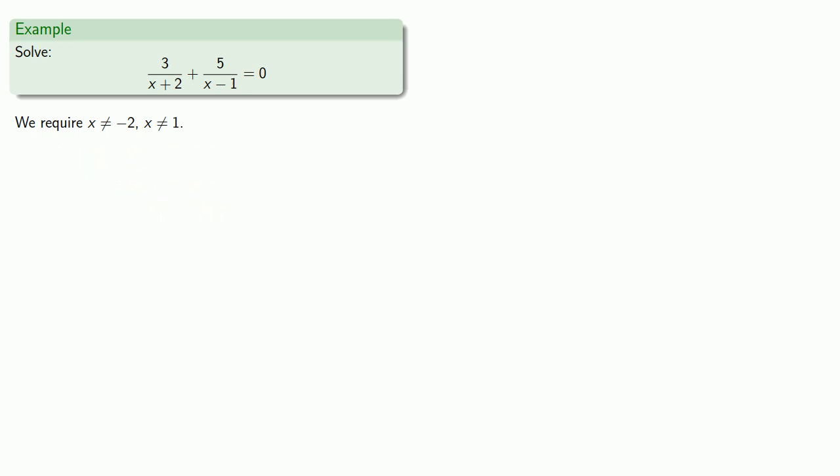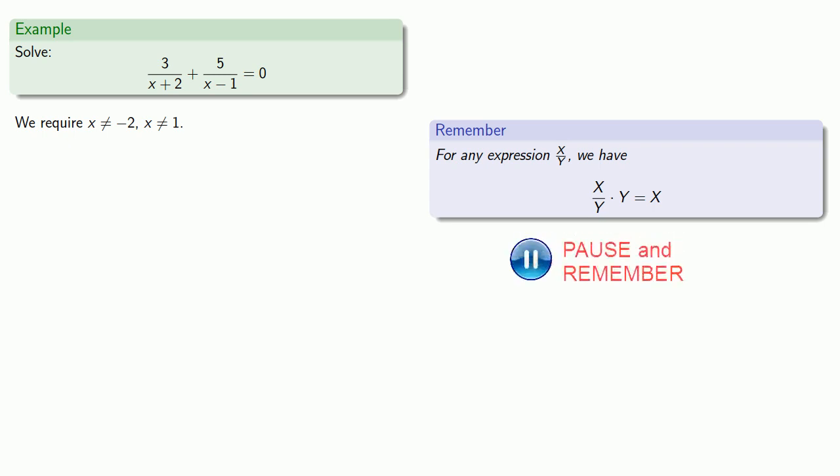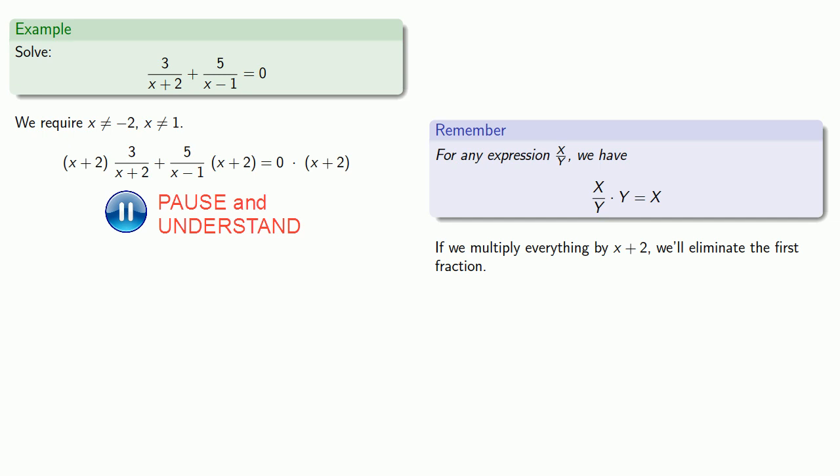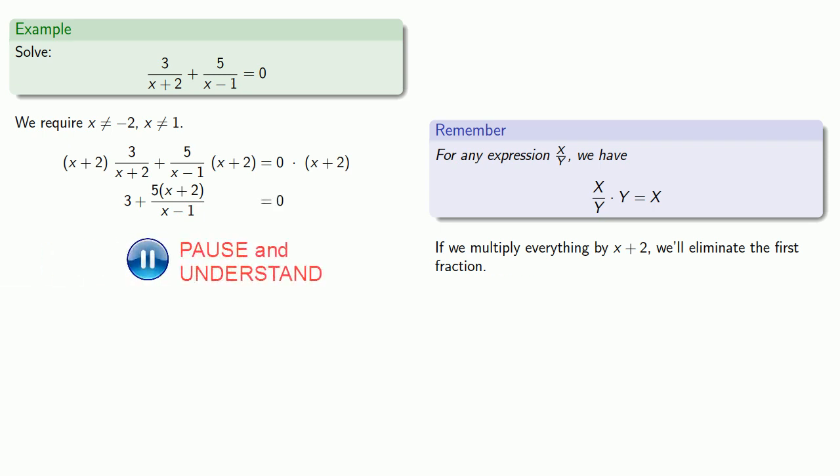But as long as we accept that limitation, we can try to simplify this. Remember that for any expression x over y, x over y times y gives us x alone. So if we multiply everything by x plus 2, we'll eliminate that first fraction. We have to do the same thing to everything. So if we're going to multiply the first fraction by x plus 2, we'll also have to multiply the second fraction by x plus 2, and also the terms on the right-hand side by x plus 2. In the first fraction, we'll have this common factor of x plus 2 that we can remove, which leaves us with 3. And since factored form is best, we'll write our second fraction as 5 times x plus 2, still with that denominator x minus 1. And on the right-hand side, 0 times, well, who cares, it's going to be 0.